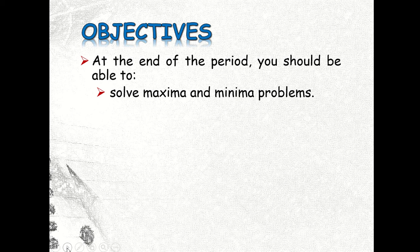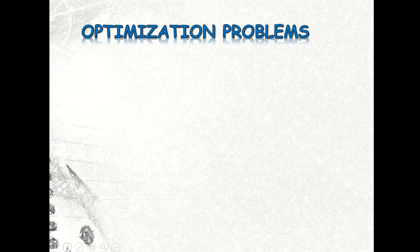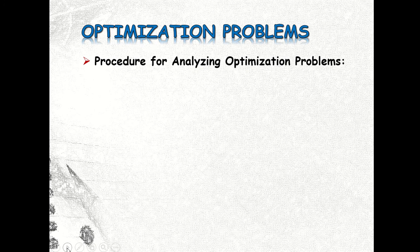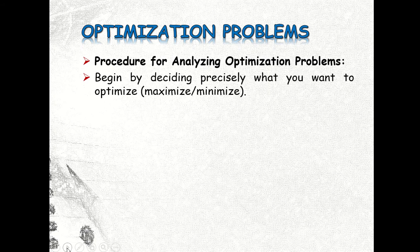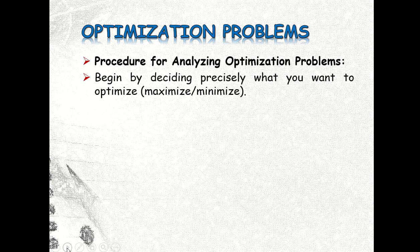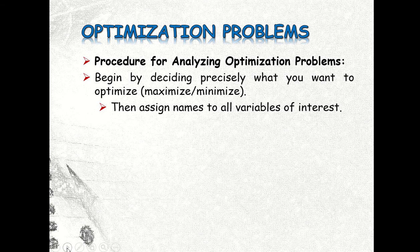Before we go to the solution to maxima and minima problems, let us have the procedure first on how to do it. We have here the procedure for analyzing optimization problems. We have to begin by deciding precisely what you want to optimize, or what you want to maximize or minimize in the given problem.